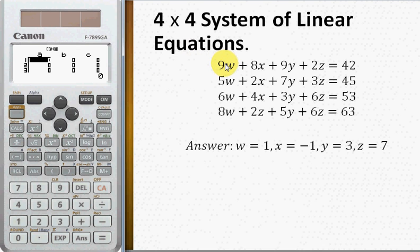A is the coefficient for W, B is coefficient for X, C coefficient of Y, D coefficient for Z, and the number here is E.